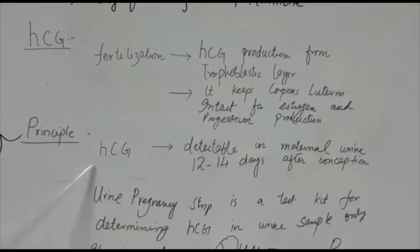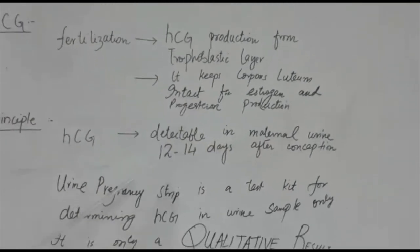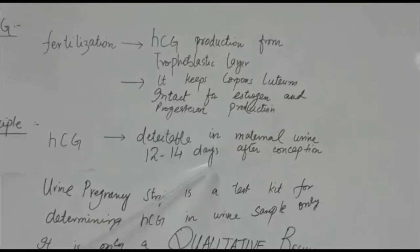Here we are detecting human chorionic gonadotropin in the initial 12 to 14 days after conception.